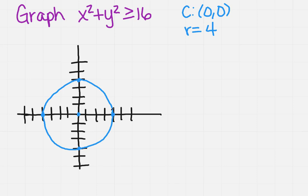Now, where am I going to shade? So as we said before, you want to pick a spot inside the circle or outside, whichever way you want to do it. I'm going to do the origin. So I get 0 squared plus 0 squared is greater than or equal to 16. 0 is greater than or equal to 16, which is a false statement.